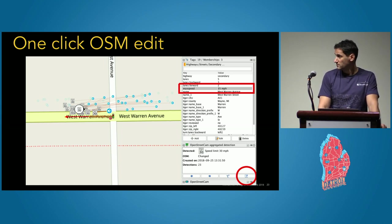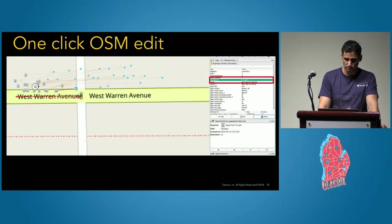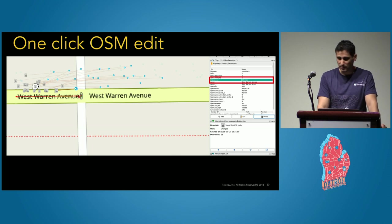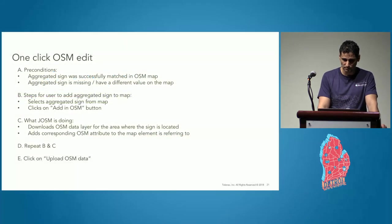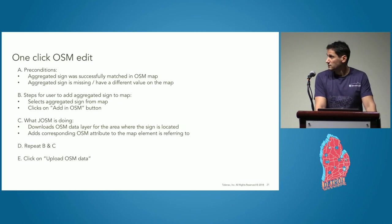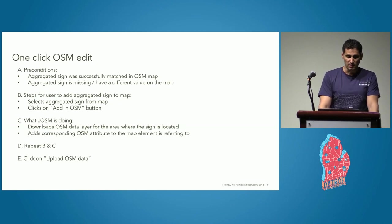We call this functionality one-click OSM edit. So this will be the end result with the max speed attribute updated. This slide presents some details about preconditions, what JOSM is doing, and the user steps. Also, here it's important to note that we should always start with the aggregated detections, not with the raw detections which were not aggregated before.